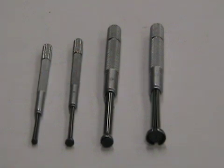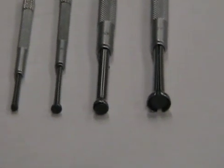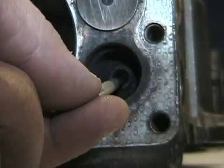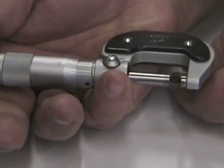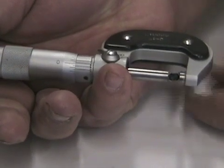A small hole gauge is a measuring tool with a round expandable head that is used with a micrometer to measure the inside of small holes. Small hole gauges can only measure small holes such as valve guides.